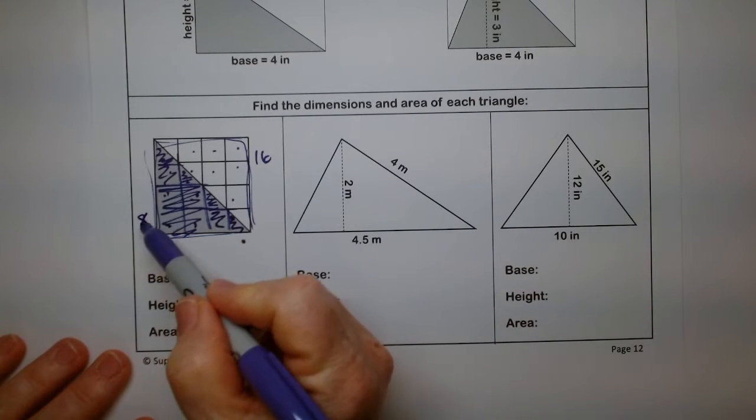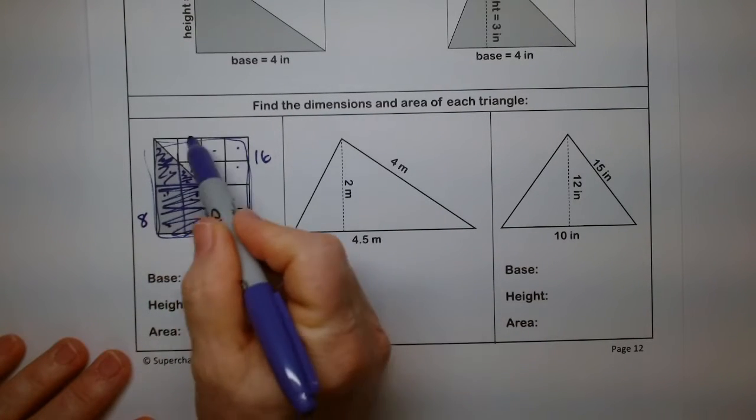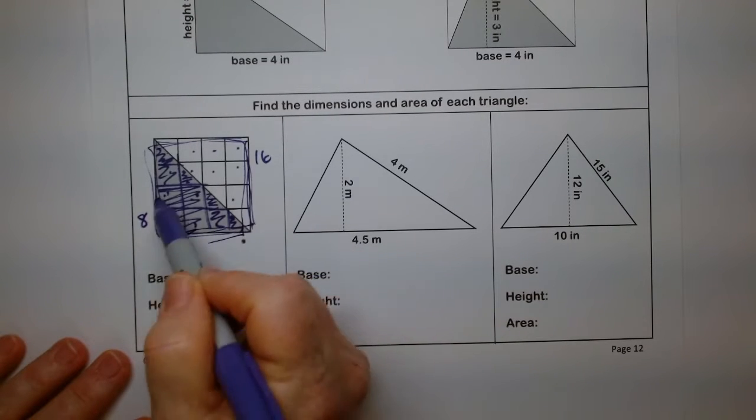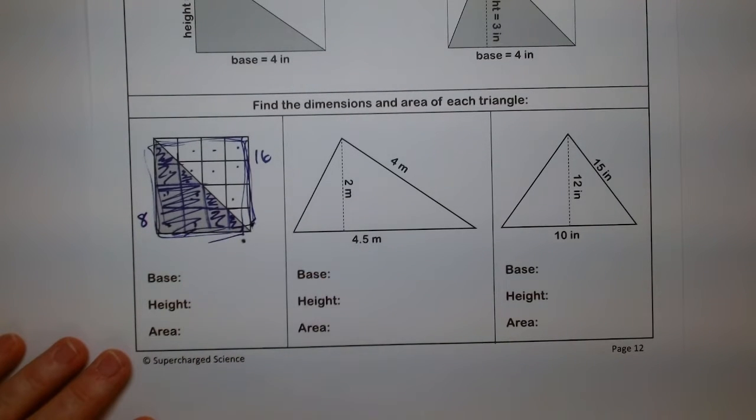So the whole square was 16, but just the gray part was only 8. So the area of a triangle is half the area of the quadrilateral, half the area of the square or the rectangle.